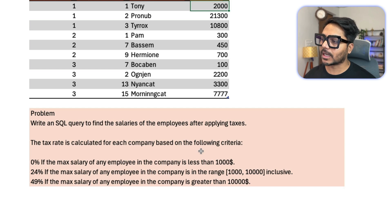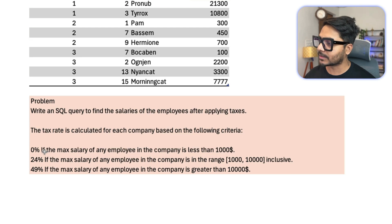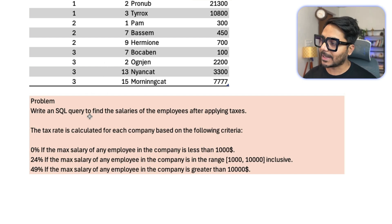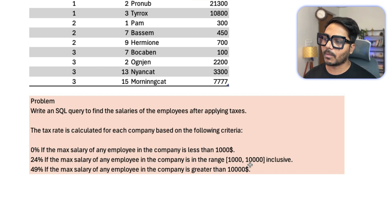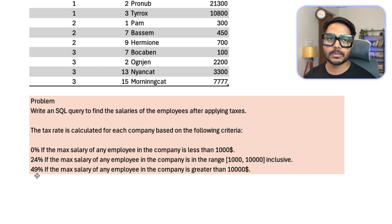The tax rate is calculated for each company based on the following criteria. There are three brackets: 0%, 24%, and 49%. Zero percent if the max salary of any employee in the company is less than 1,000 dollars. Twenty-four percent if the max salary is between 1,000 and 10,000 dollars inclusive. Forty-nine percent if the max salary is greater than 10,000 dollars.